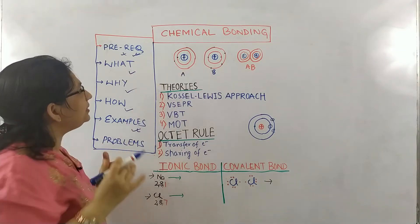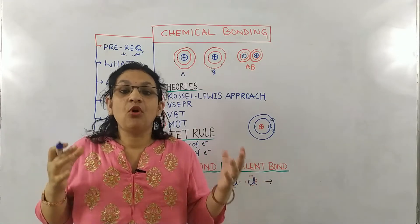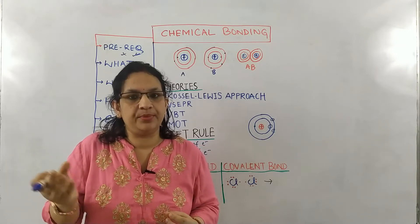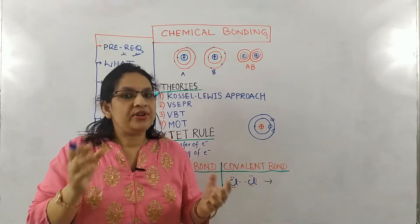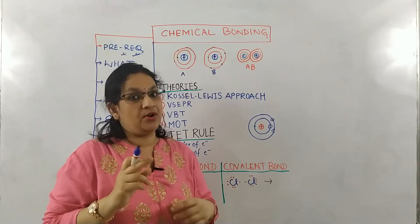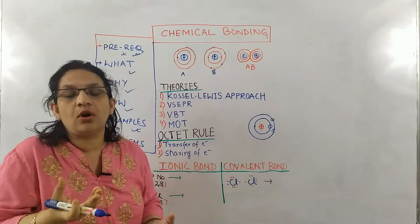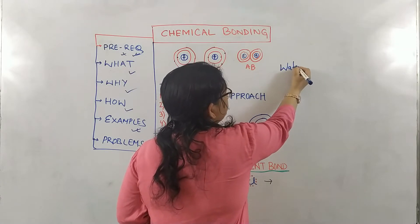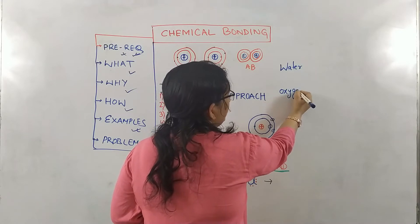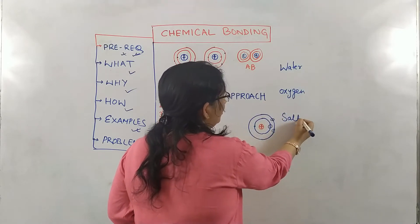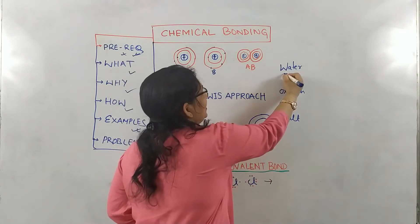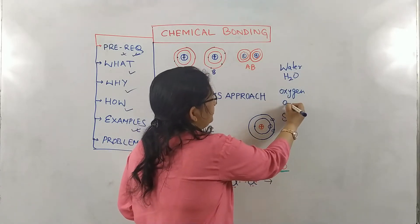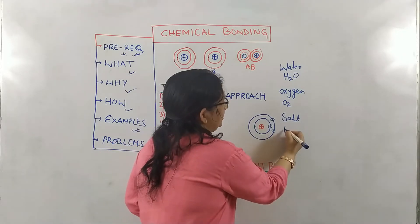So this was your prerequisite. Now the very important question is: what is chemical bonding? To understand chemical bonding, let us see a few examples which we see in our day-to-day life. We all know that water is very important for us. Oxygen is also important for us. And sodium chloride, or salt, enhances the taste of our food. Let me write water, oxygen and salt. Can you tell me what is the formula of water? It is H₂O. Formula of oxygen is O₂. And formula of salt is NaCl.